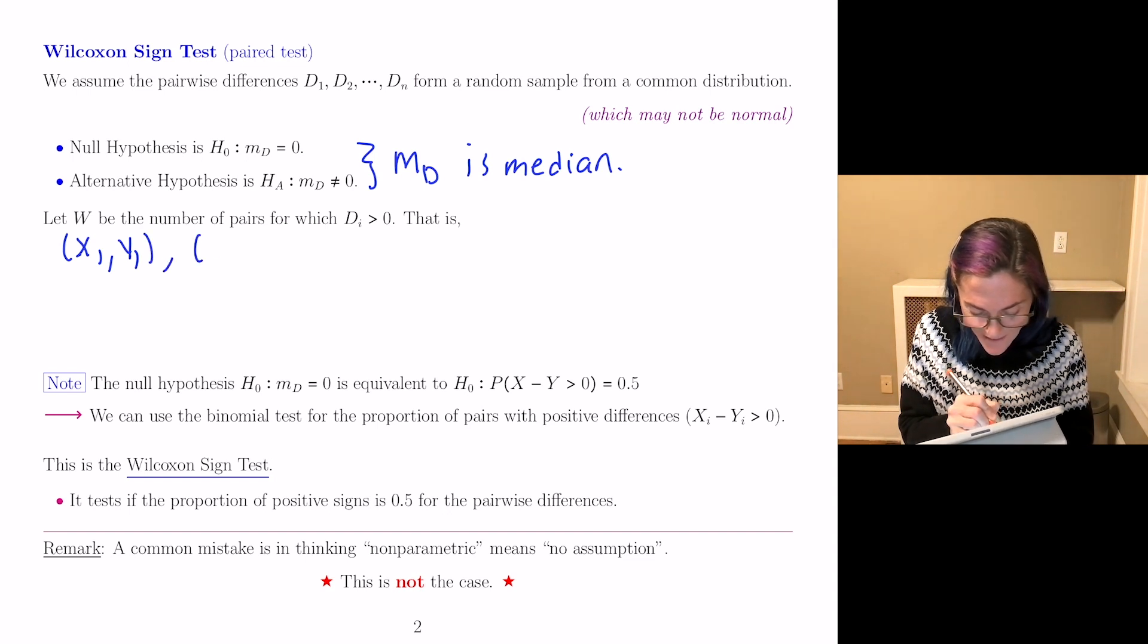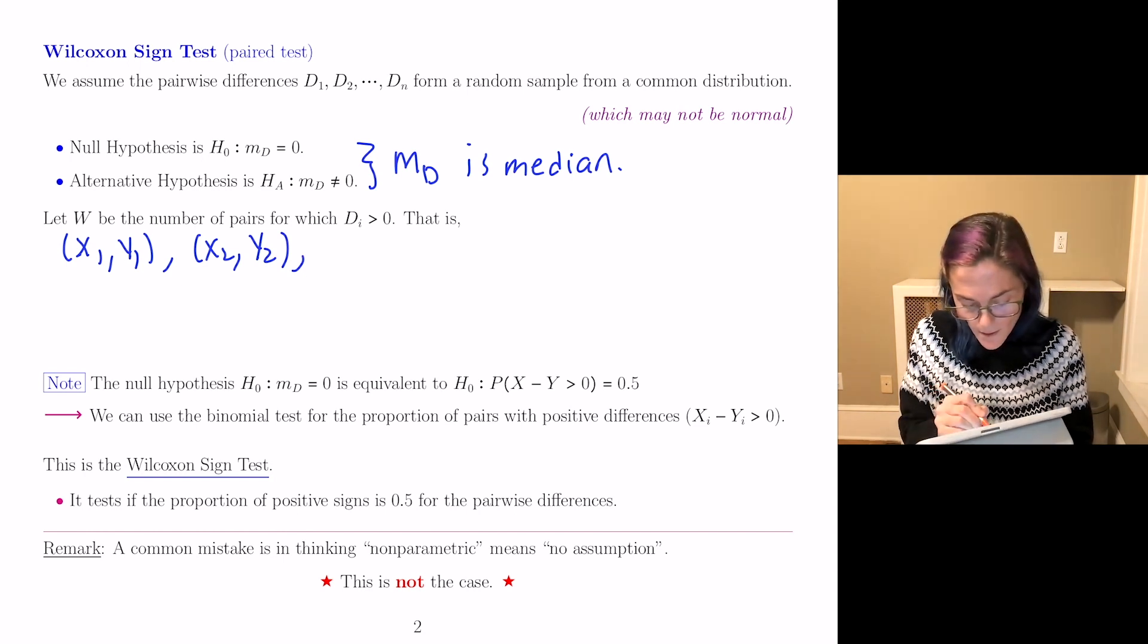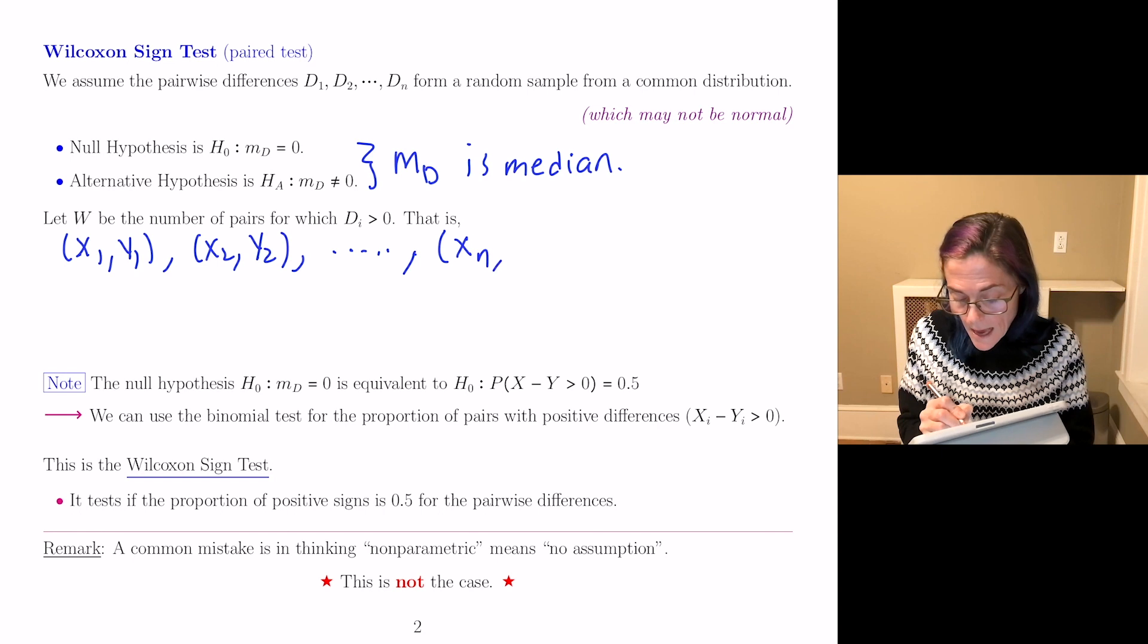There's one pair. We have, say, X₂, Y₂. There's another pair. And then we have Xₙ out to Yₙ. There's our nth pair.